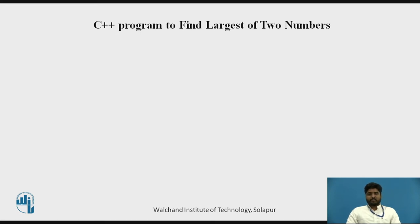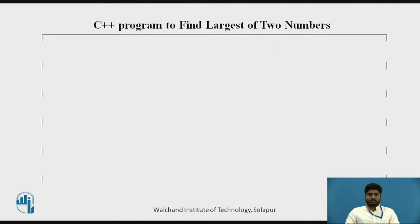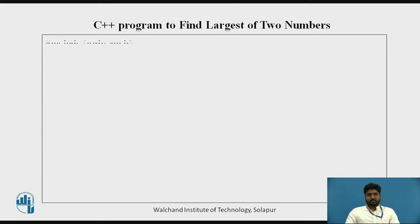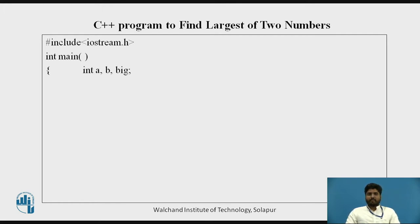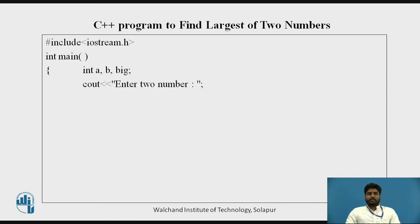Next is the C++ program to find the largest of two numbers. We include iostream.h and write int main. We take three variables: a, b, and big. The user enters two numbers, which are stored in a and b.